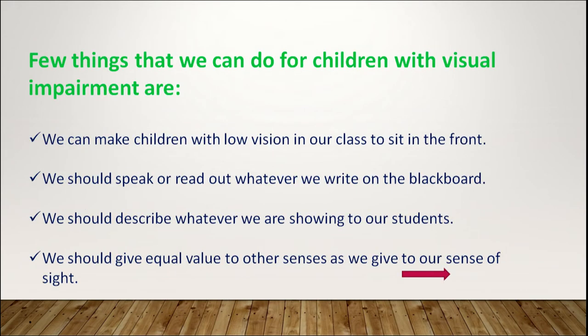Let us discuss a few things a teacher can do for children with visual impairment. First, make them sit at the front of the class — children with low vision are then closest to the blackboard and can see better; it is the simplest solution. Second, speak or read aloud whatever you write on the blackboard. Third, describe whatever you are showing to your students — a description helps them imagine what is being shown to other students. Finally, give equal value to other senses; we always prioritize sight, but it is important to also value hearing and touch.